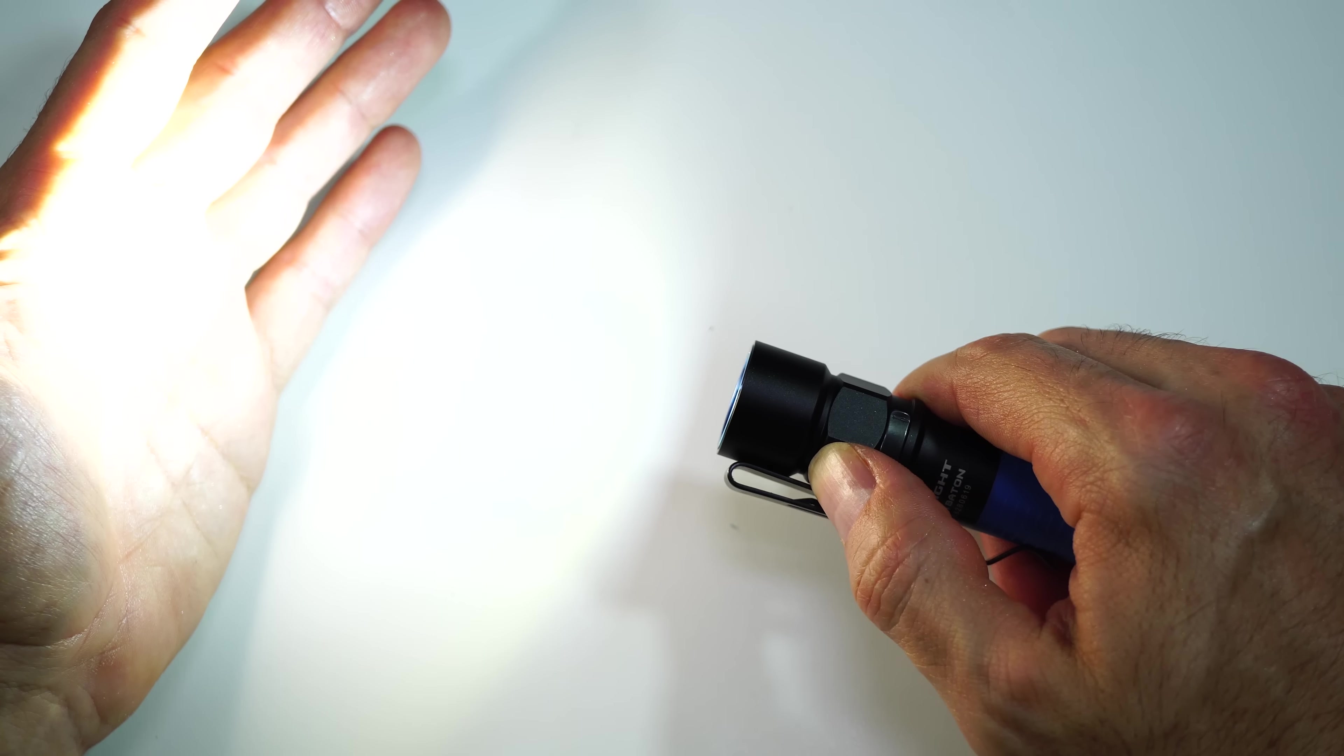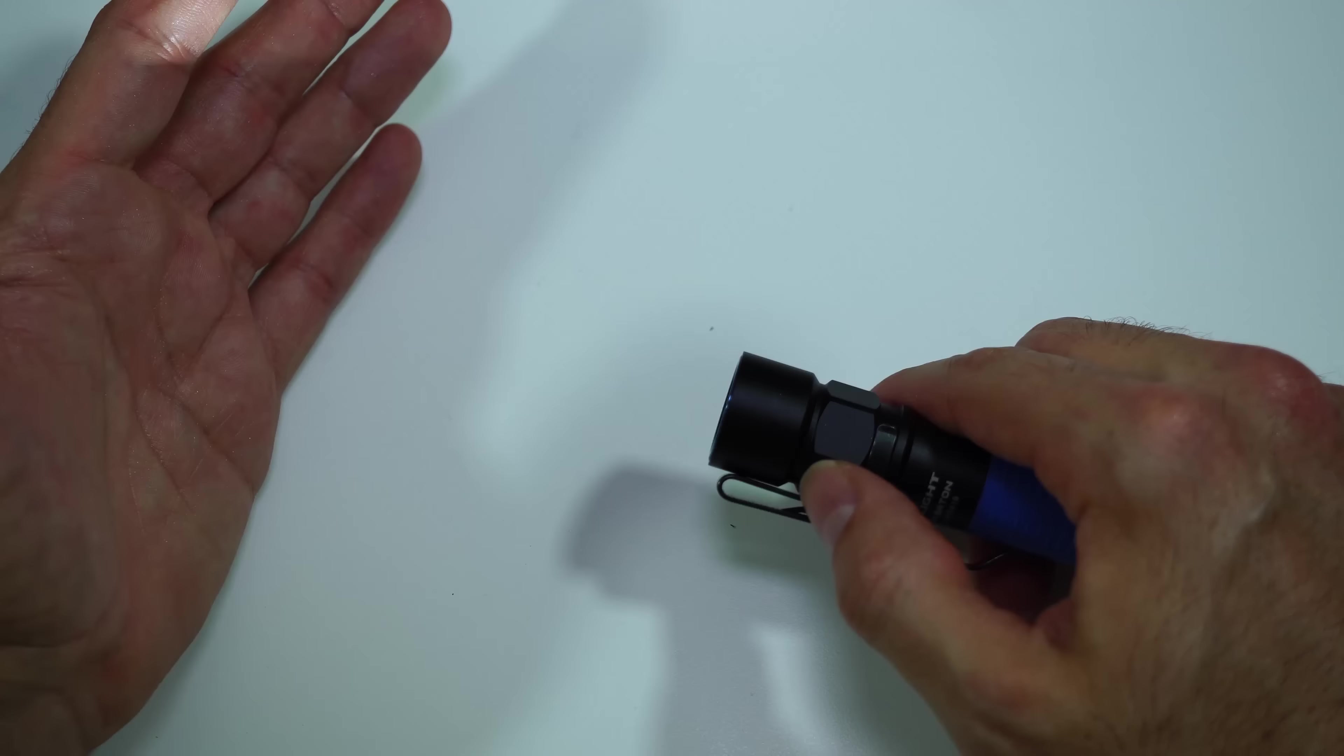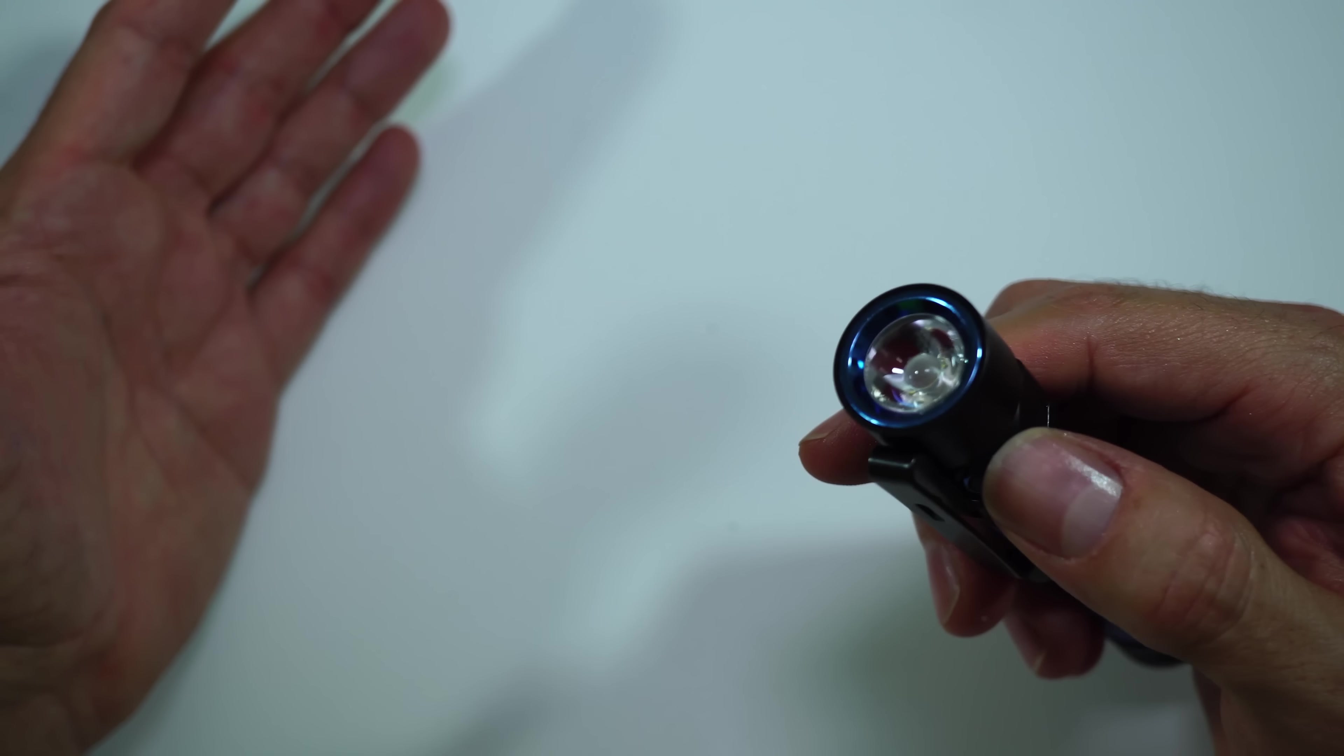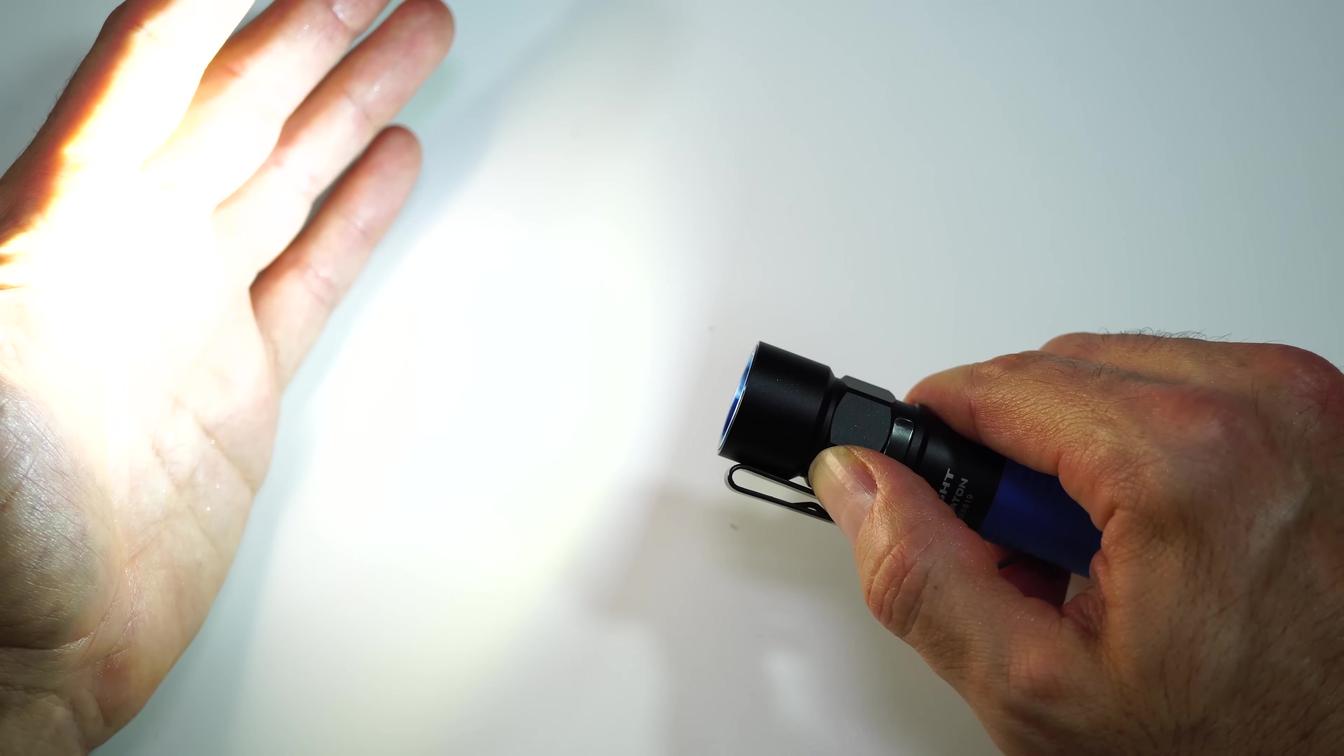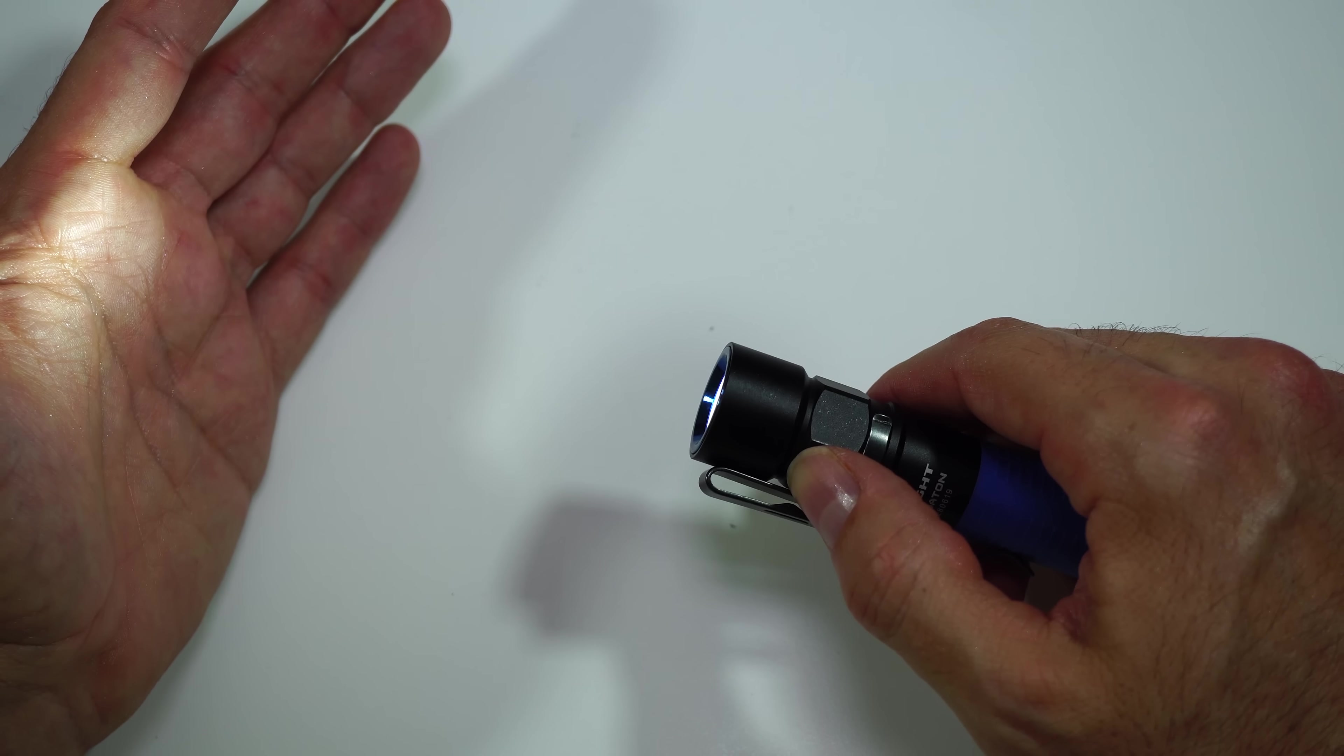From any mode, you can get to the strobe by triple clicking, and it will go into the strobe, and then click it again. It will go back off. Or from the strobe, if you hold it down, it will go back to whatever brightness you had it before that.